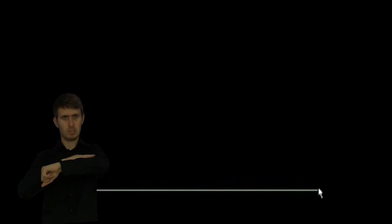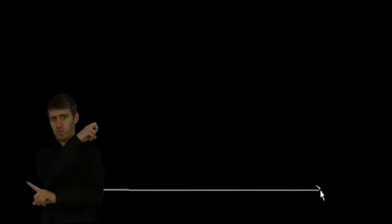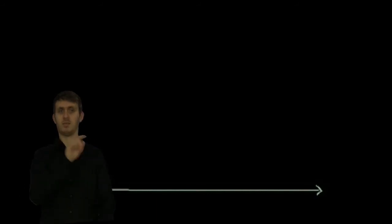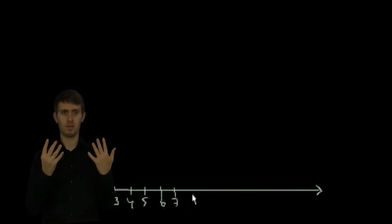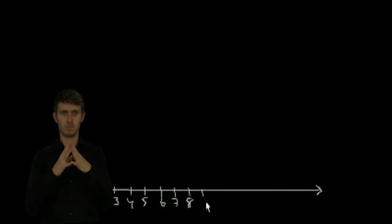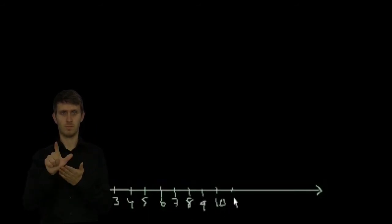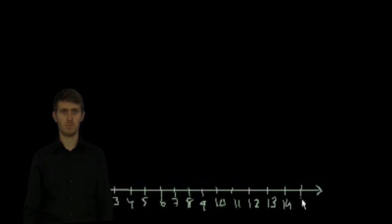Let's say I want to draw the number line again. Actually, I have a line tool, so I shouldn't give you all those ugly looking lines that I've been giving you. Look at that. That's amazing. OK, so that's a nice looking line. So let me draw a number line. 0, 1, 2, 3, 4, 5, 6, 7, 8, 9, 10, 11, 12, 13, 14, 15.